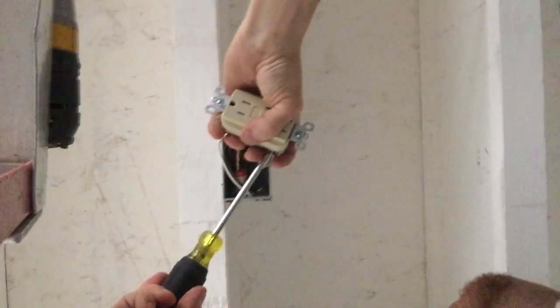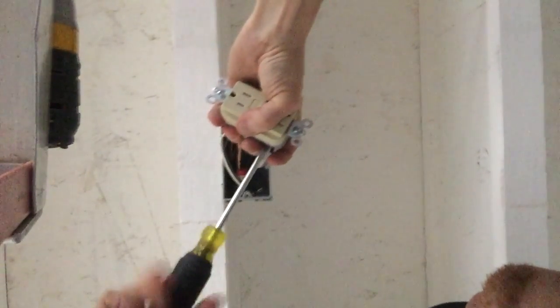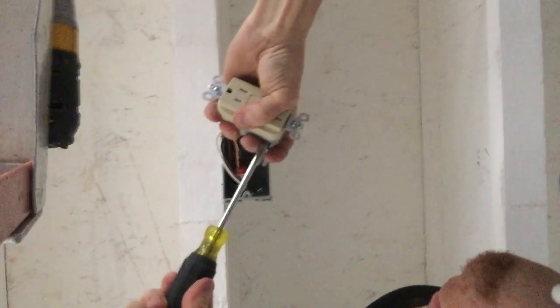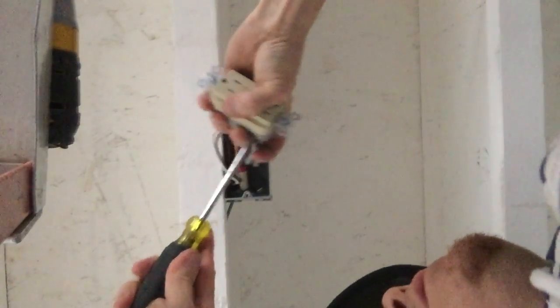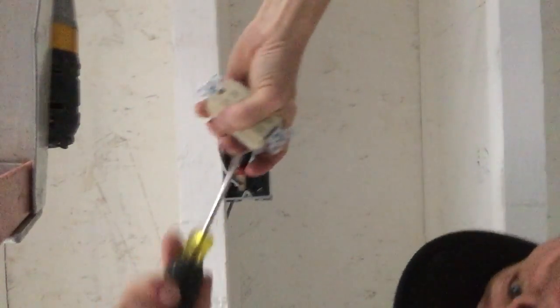Once those are all connected and snug, you're going to put the outlet tucked away into the box, support it, and put the cover on.